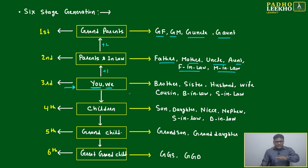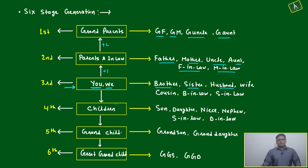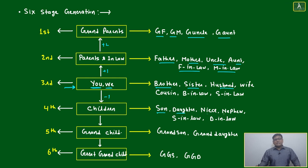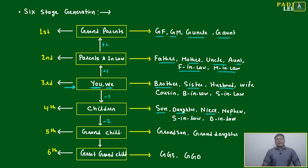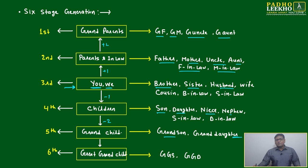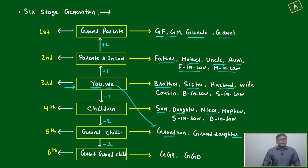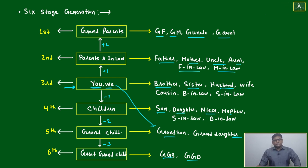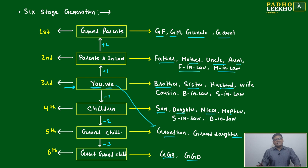Your same generation includes brother, sister, husband, wife, cousin, brother-in-law, sister-in-law. One generation below are your children: son, daughter, niece, nephew, son-in-law, daughter-in-law. Two generations below are grandchildren: grandson, granddaughter. Three generations below are great-grandchildren: great-grandson, great-granddaughter. We never calculate beyond these six generations.